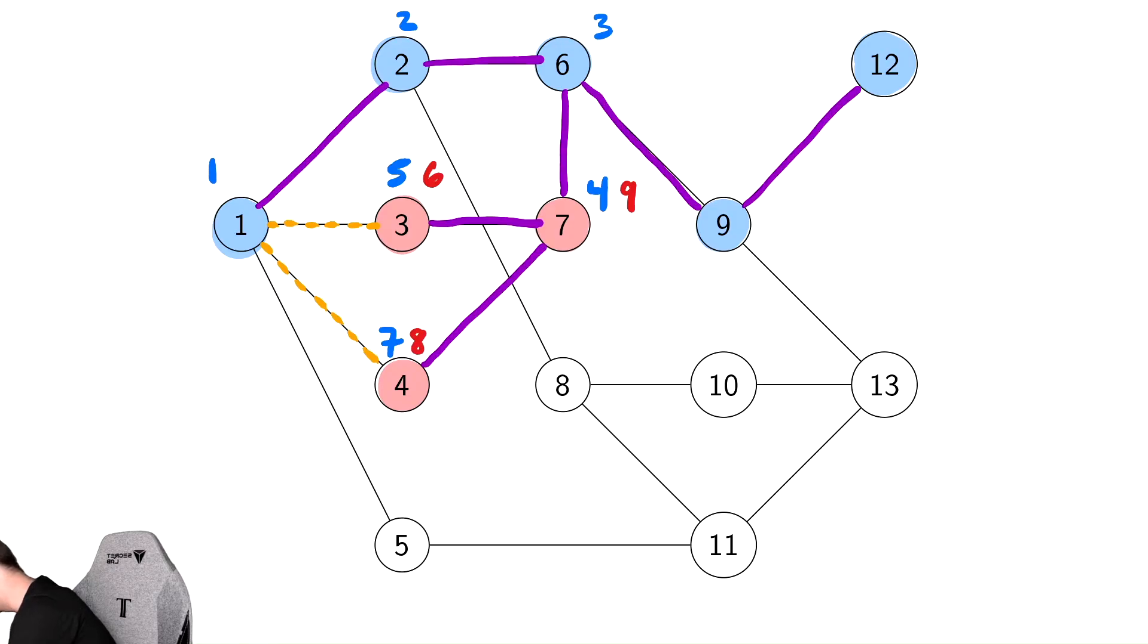I forgot to write down the discovery time. I apologize. This is going to be 10 for the discovery time. For 12, it's an 11 for the discovery time. There's nowhere to go from 12 at all. So that is 12. And then we are done with 12, so we recolor it red.